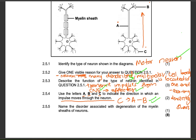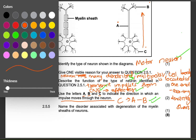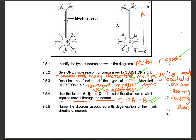Name the disorder associated with the degeneration of the myelin sheaths of the neurons. Like I said, this is a popular question. Multiple sclerosis. One mark. That's it.